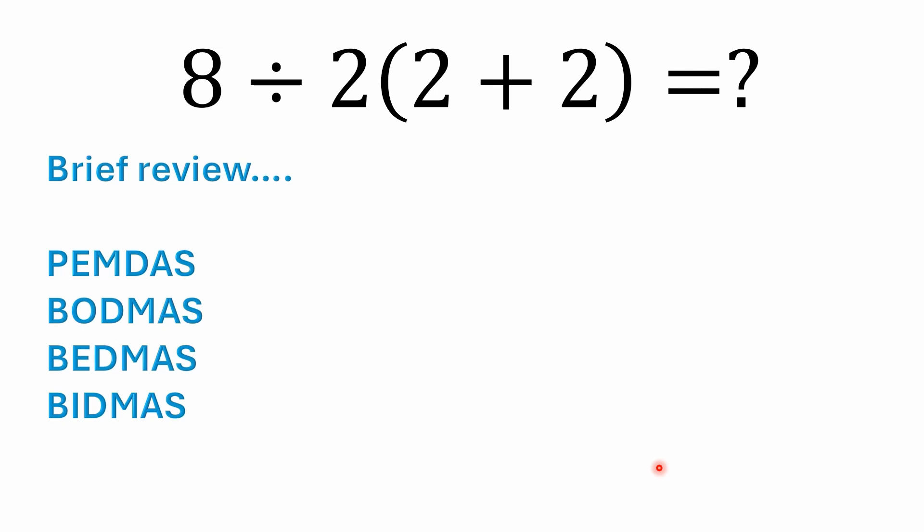PEMDAS and BODMAS will give you the same answer. It's just typically in North America they reference it through Parentheses, Exponents, Multiplication, Division, Addition, and Subtraction, whereas in the UK with BODMAS it's Brackets, Orders, Division, Multiplication, Addition, and Subtraction. A lot of people confuse these because they think the order of the M and D or D and M makes any difference, and it doesn't. Multiplication and division have equal precedence regardless of which acronym you follow. Also, addition and subtraction have equal precedence, and you just go left to right.